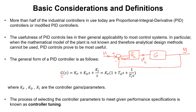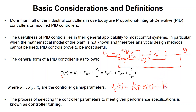The controller gets the error signal and sends a control signal UC to the system. If I show the error by E(t) and the control signal by UC(t), the PID law is: UC(t) equals a gain KP times the error — so we just magnify it — also KD times the time derivative of this error.